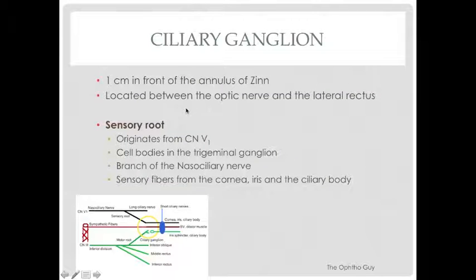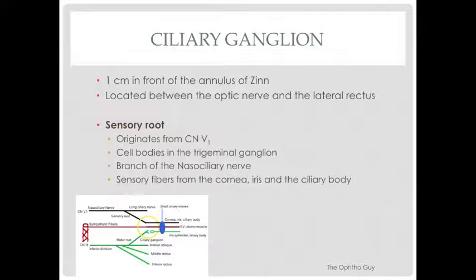Going back to our text: the sensory root originates from cranial nerve V1. The cell body lies in the trigeminal ganglion, and it's a branch off of the nasociliary nerve. It provides sensation to the cornea, the iris, and the ciliary body.